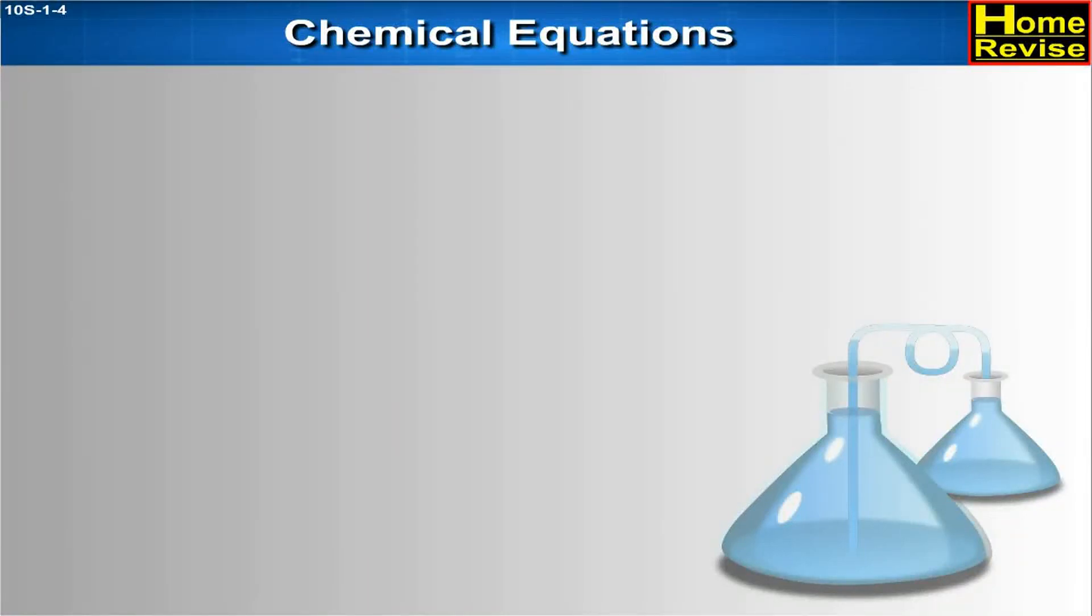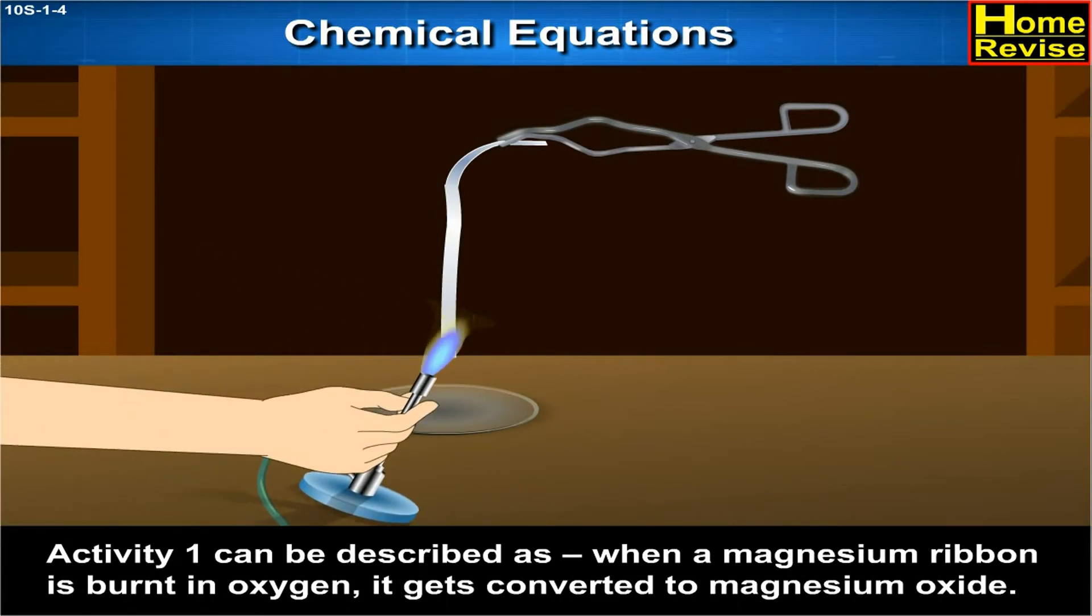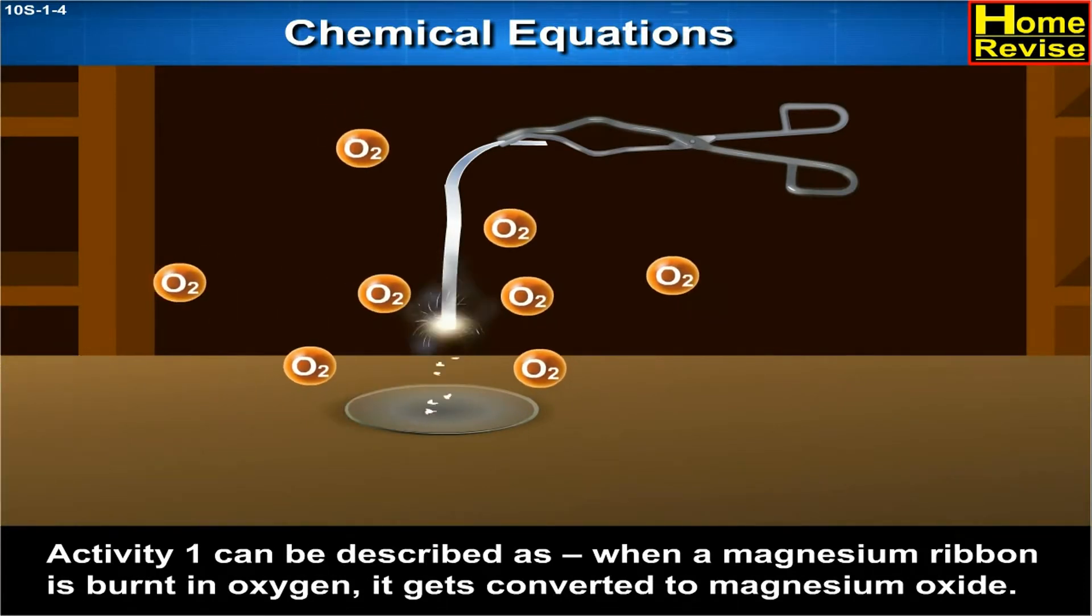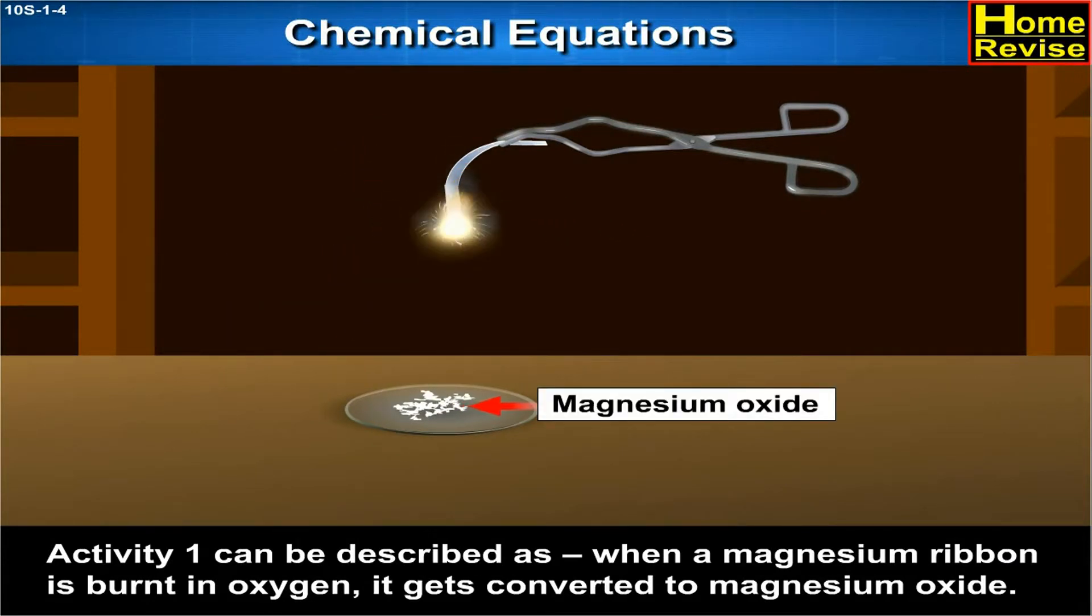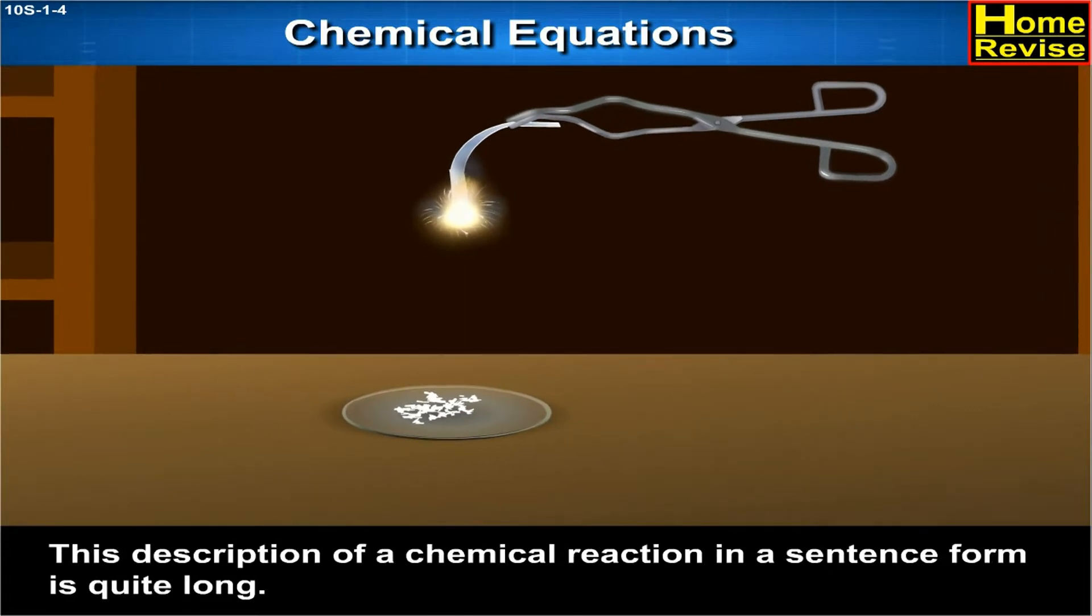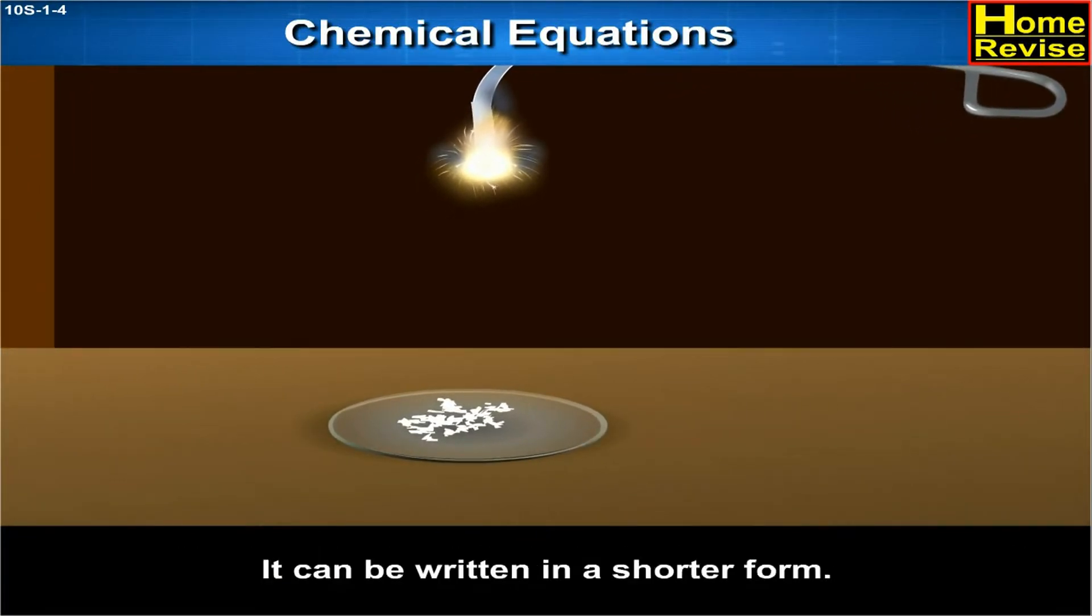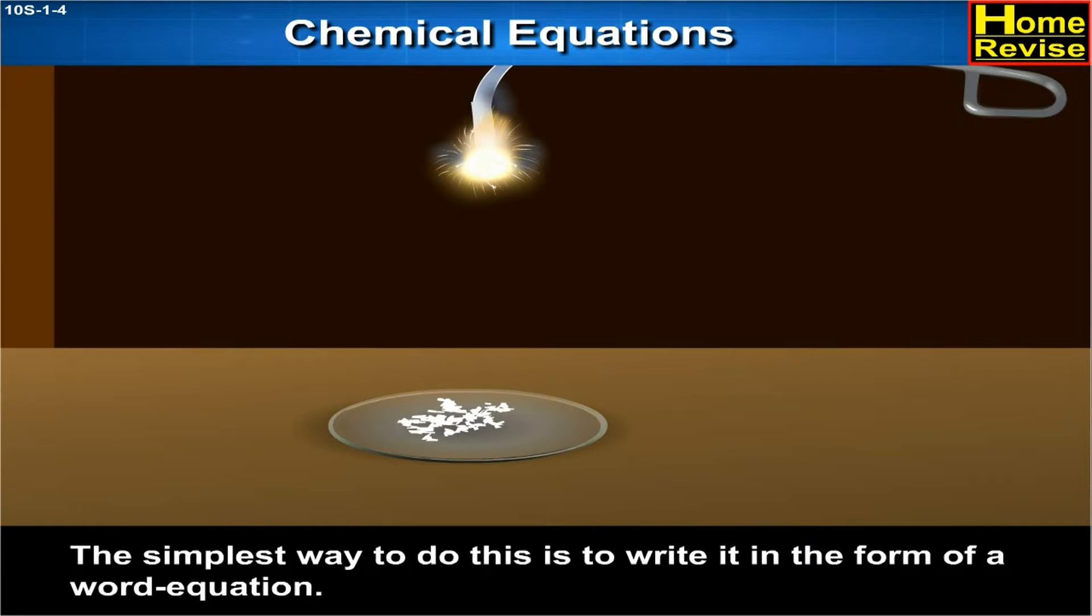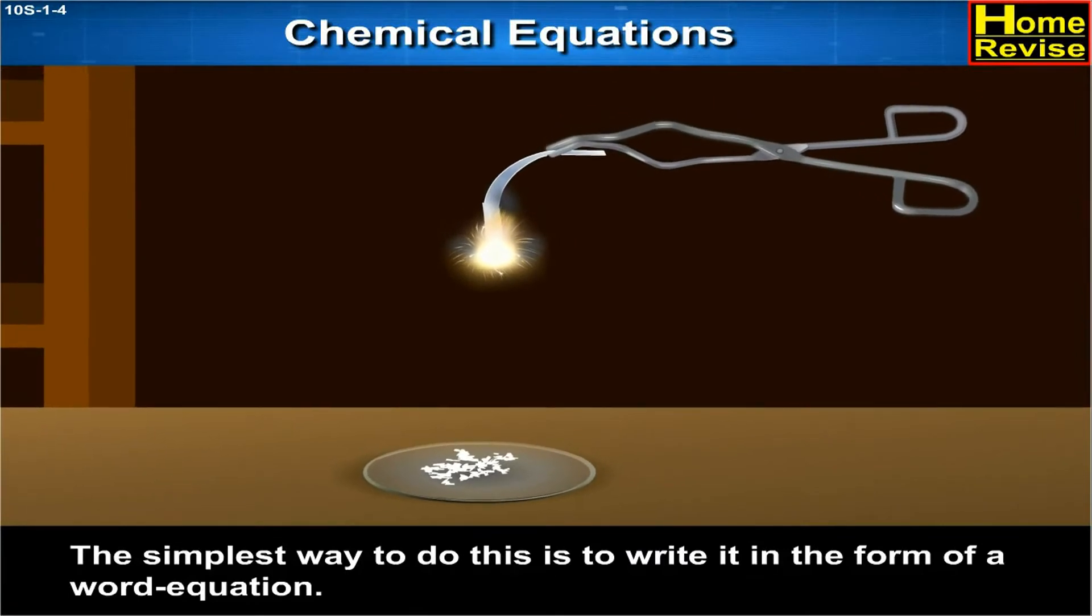Chemical equations. Activity 1 can be described as: When a magnesium ribbon is burnt in oxygen, it gets converted to magnesium oxide. This description of a chemical reaction in sentence form is quite long. It can be written in a shorter form. The simplest way to do this is to write it in the form of a word equation.